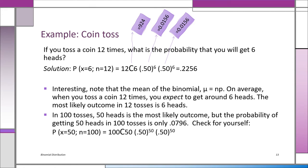The probability is 12C6 × (0.5)^6 × (0.5)^6, which works out to 0.2256. With 100 tosses, μ = NP = 100 × 0.5 = 50 heads — the most likely outcome. But the probability of getting exactly 50 heads in 100 tosses is only 0.0796. Even though it's the most likely outcome, it's a low probability. You toss a coin 100 times and sometimes you get 49, sometimes 50, sometimes 51 — it averages out to 50 heads. That's the expected value.